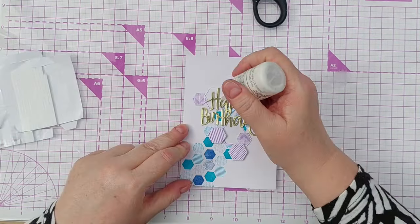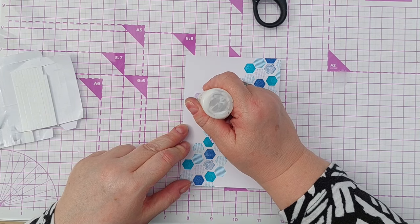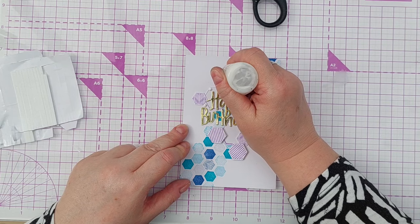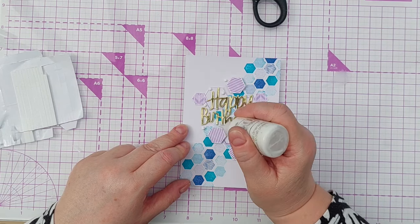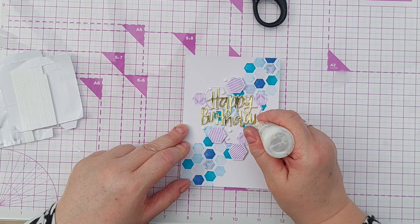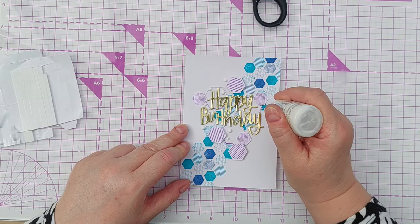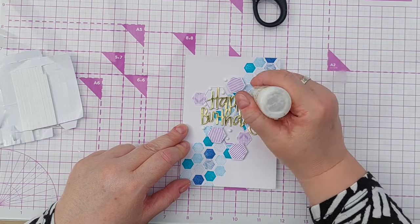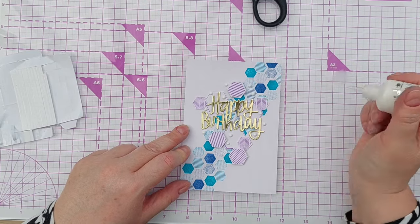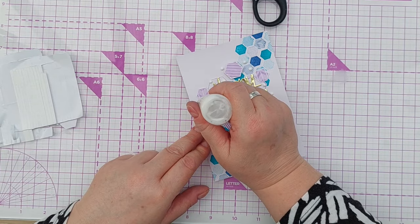And for a little bit of extra dimension and shine and interest and energy I'm going to add some white Nuovo drops and the beautiful thing about the archival inks is they are permanent once dry so these white drops won't absorb the colour they will sit on top of the ink and stay white.